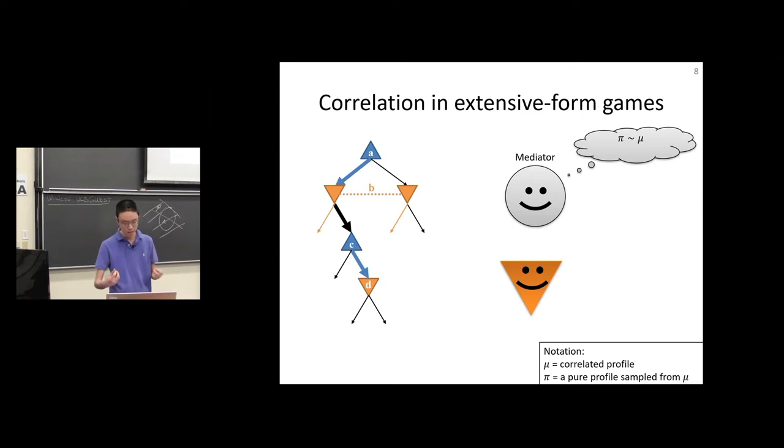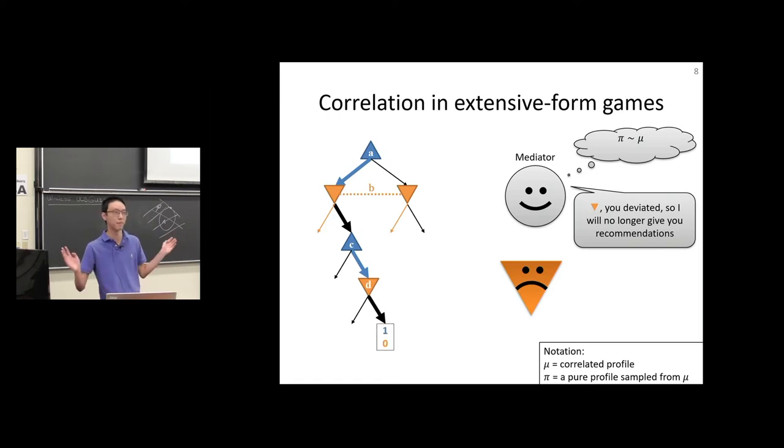The mediator looks at blue's information set C and says, blue, you should play right. Blue goes right. Now, since orange has already disobeyed one of the mediator's recommendations, the convention we're going to adopt, which is without loss of generality due to the revelation principle, is that if a player has deviated, they will no longer receive recommendations. Orange is sad because they're no longer receiving recommendations but has to choose something to do anyway. Let's say orange goes right and the game ends there.